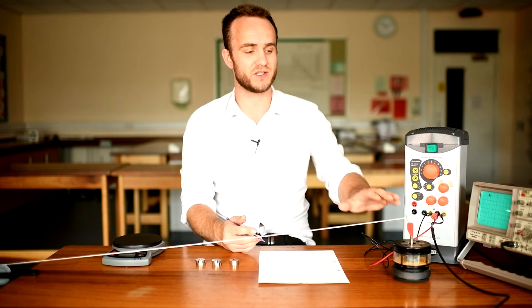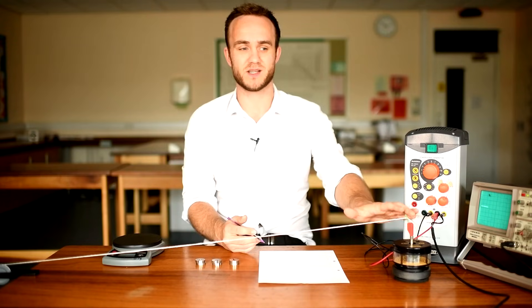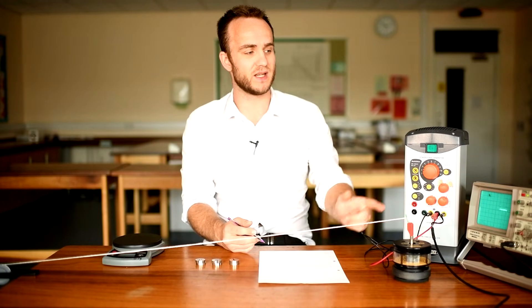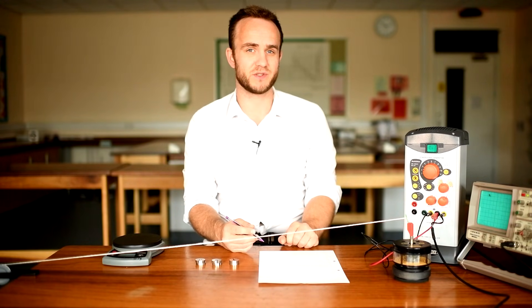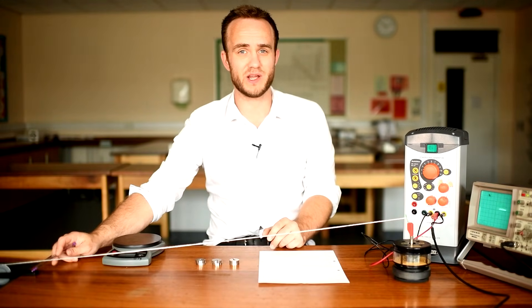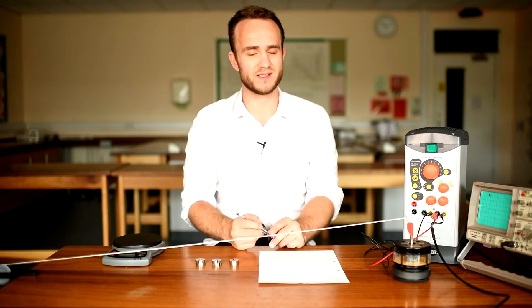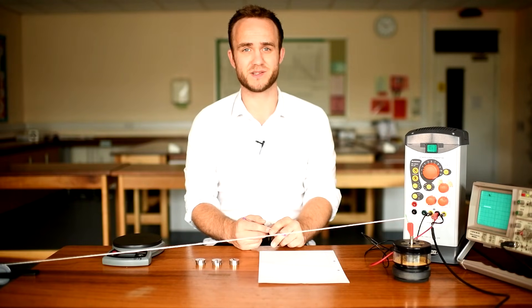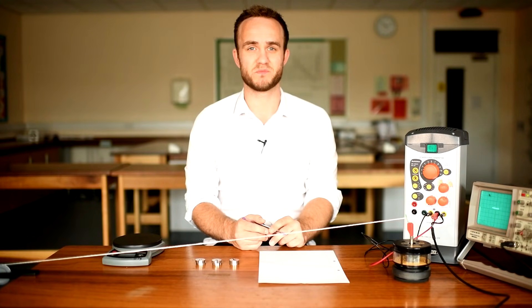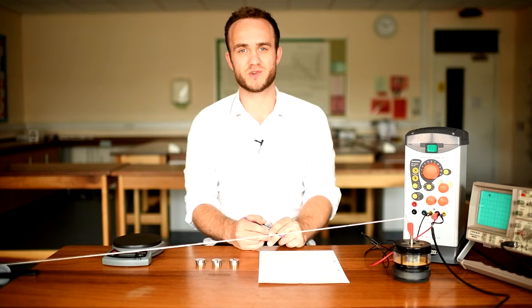What I have is a signal generator connected to an oscillator, so that's just going to set the string vibrating, and I also have it hooked up to my CRO, my cathode ray oscilloscope. That's going to allow me to measure the frequency accurately. I also have my pulley over here. The string is going over that, and we have a hanger and some masses on the end of the string, which is providing the tension in the string.